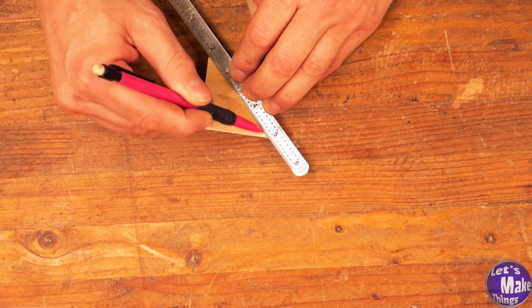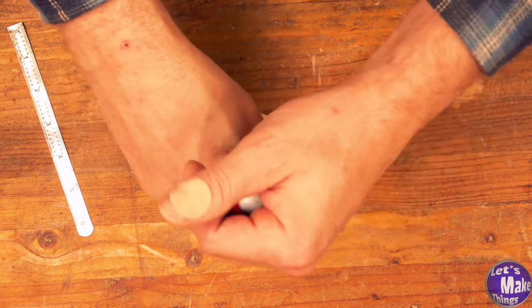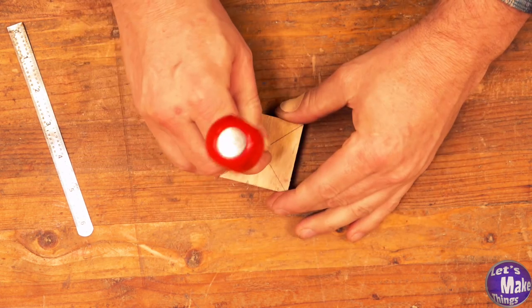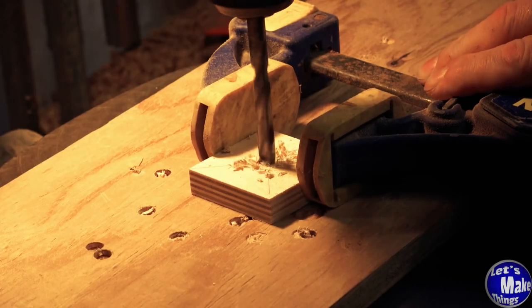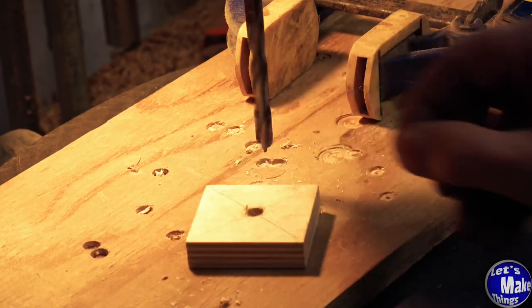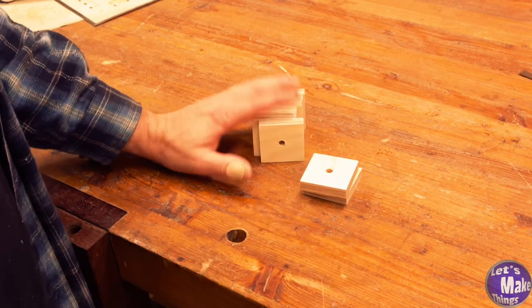After you've cut them out, we'll once again draw an X on the top. We'll use an awl in the center. And now, we're going to drill these out at 5 sixteenths of an inch.